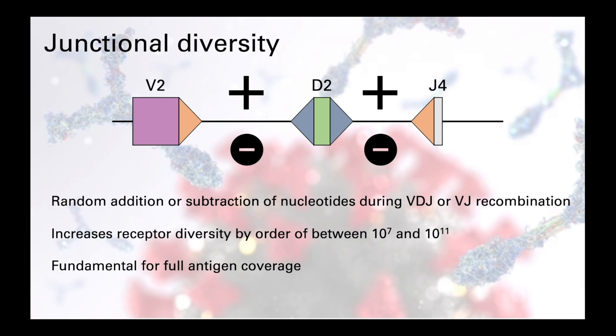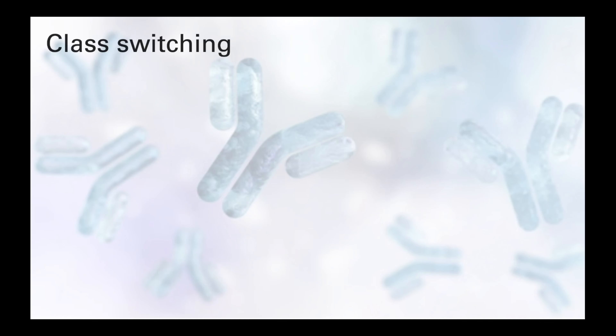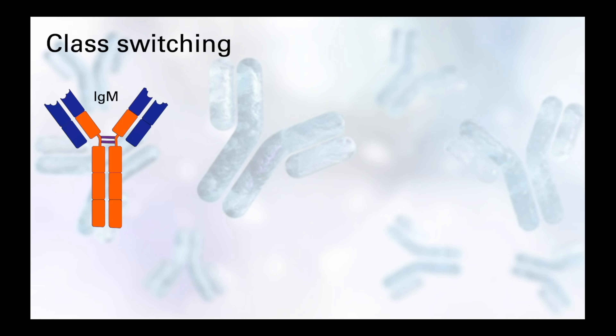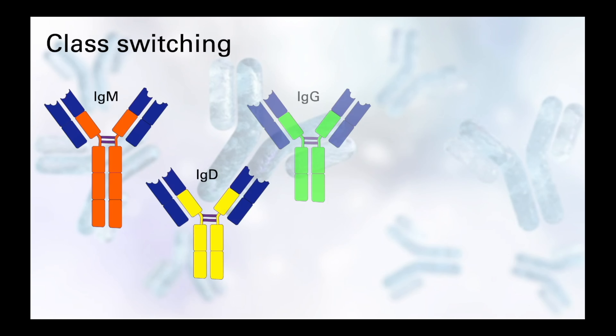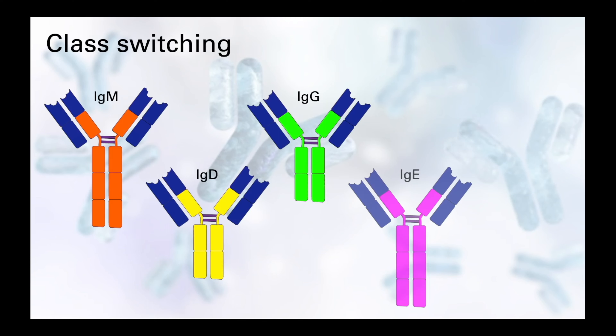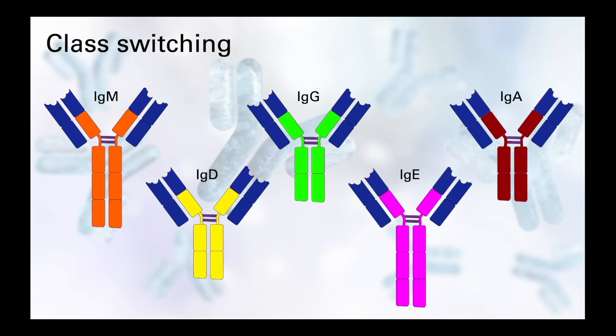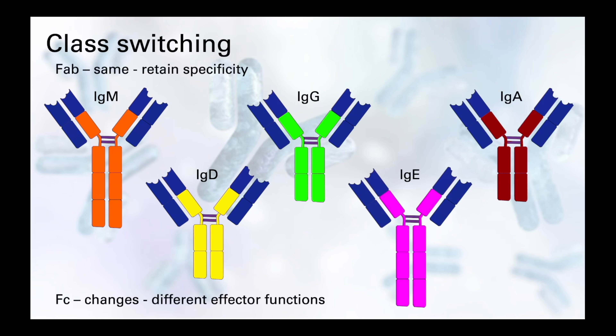B cells are also able to add another level of diversification through their ability to class switch, which we discussed in detail in a previous video. Briefly, class switching is the swapping of the constant region of the heavy chain from one antibody isotype to another whilst retaining the antibody specificity of the variable domains.